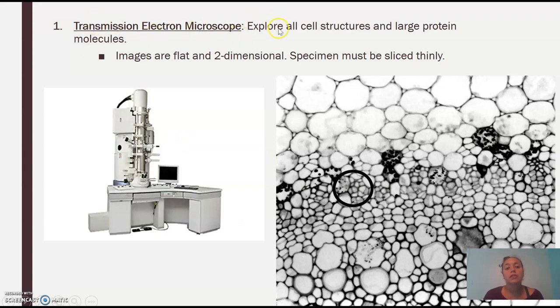So transmission electron microscope explores cell structures and large protein. The images are flat and two-dimensional because you have to slice it really thin. So when you were cutting this, you'd have to cut it very thinly. We actually had one of these in my college. And part of my, I had a little job where I had to actually make all the specimens and use this machine. So it's pretty fun.